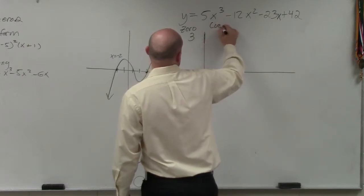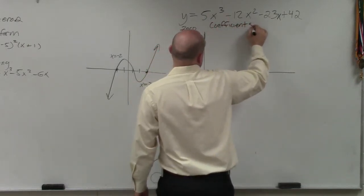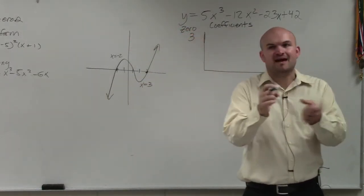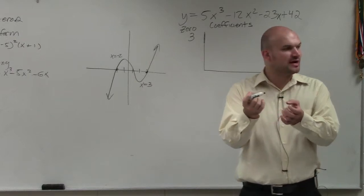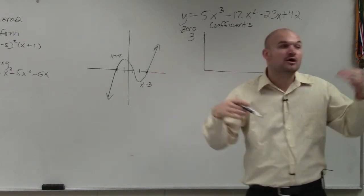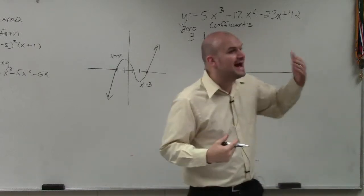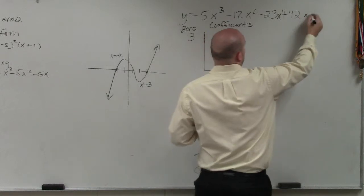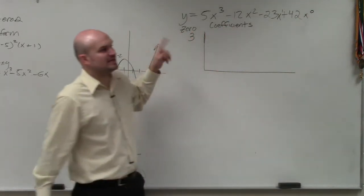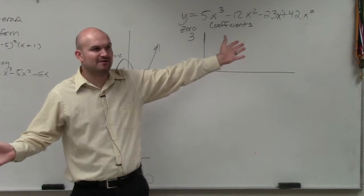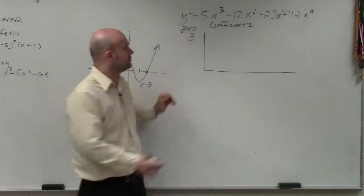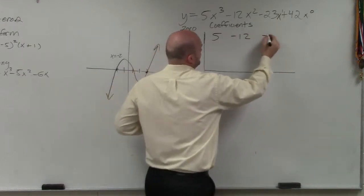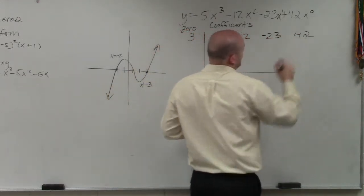And then up here is going to be your coefficients. If you guys remember in the long division, there's a couple problems where you didn't have place values for some of those, and I said use like 0x squared or 0. When doing synthetic division, you have to include your place values. Fortunately for us, we can go from degree 3 all the way down to 0, so we have every place value covered. All you're going to do is take the coefficients 5, negative 12, negative 23, and 42.